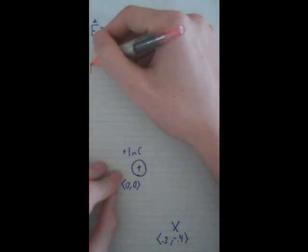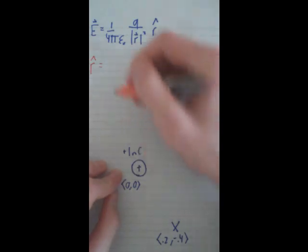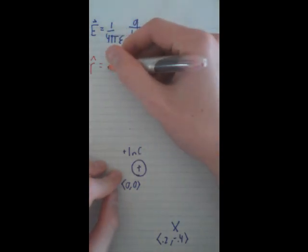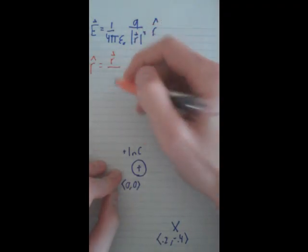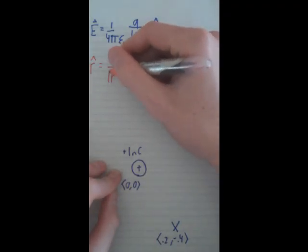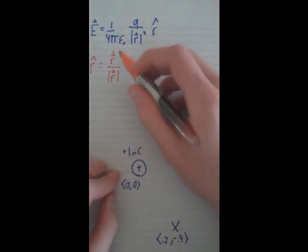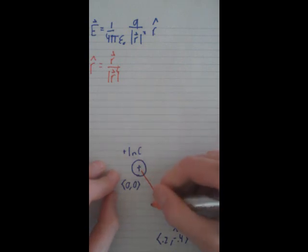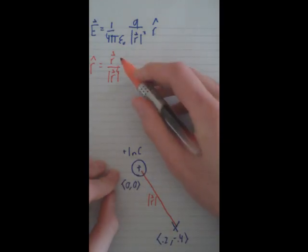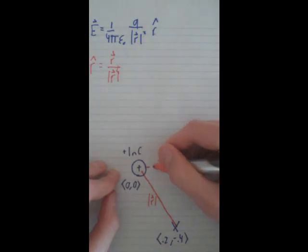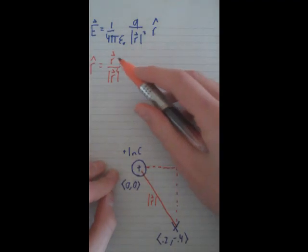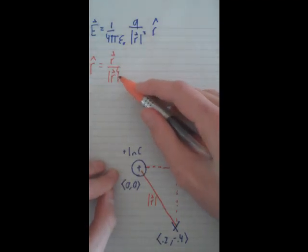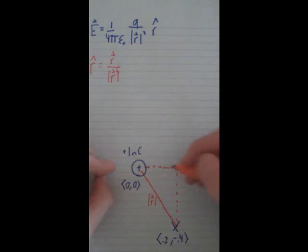r̂ equals r direction, or how far it is away in vector form, over the distance, the magnitude of distance. The magnitude of the distance is basically as the crow flies, like how far it is away. And the vector distance is how far is it on the x-axis and how far is it on the y-axis. The trick is that this top one is going to be a vector and this one is going to be a scalar.